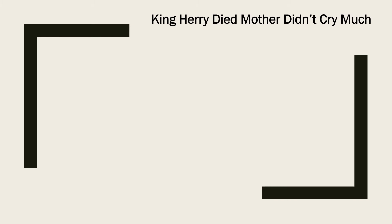How can we learn these multiples and submultiples of units? We can learn them by a very easy method — you need to remember only one sentence: 'King Harry Died, Mother Didn't Cry Much.' Just remember King, and it starts with K, which represents kilometer.